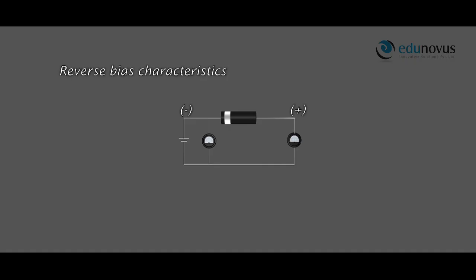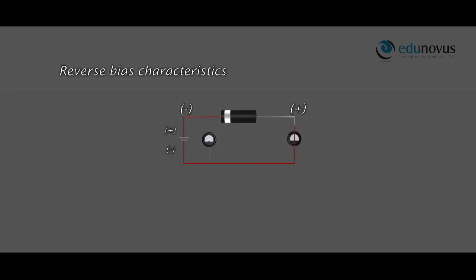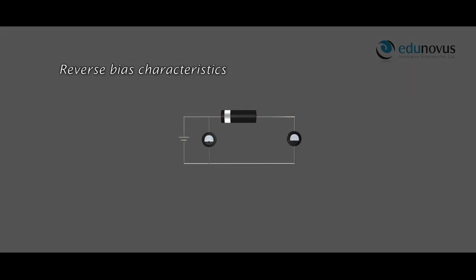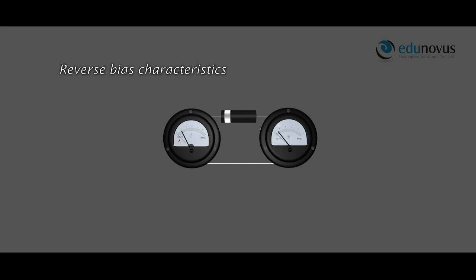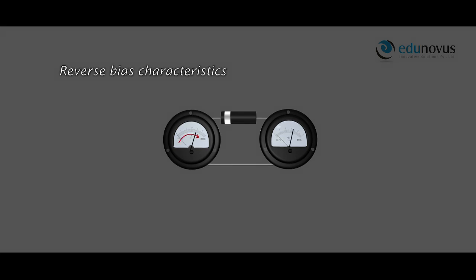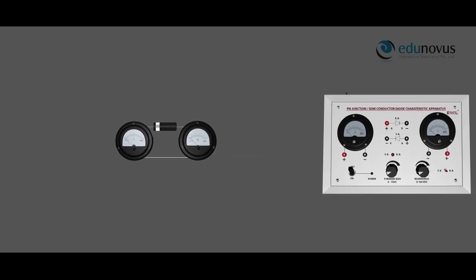Now let us move on to the reverse bias characteristics. When the P section is connected to the negative terminal and the N section is connected to the positive terminal of the battery, the PN junction is said to be in reverse bias. With the increase in the reverse bias voltage, a very small reverse current flows which remains almost constant. When the reverse bias voltage V equals the reverse breakdown voltage, the reverse current suddenly increases to a large value.